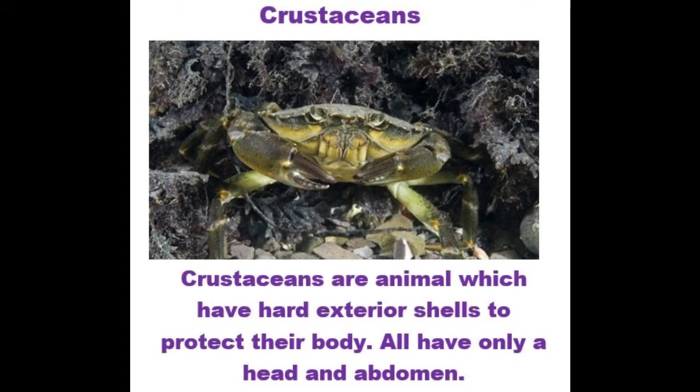We're going to be looking at what a crustacean is. Crustaceans are animals which have a hard shell to protect their body, like this crab, or shrimps and prawns, for example. They also only have two body parts: a head and an abdomen.